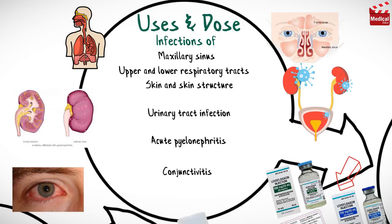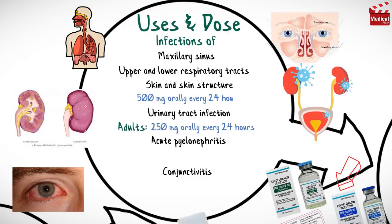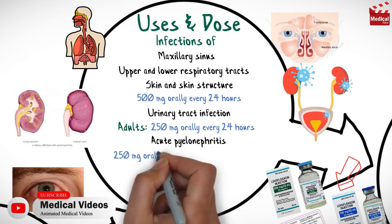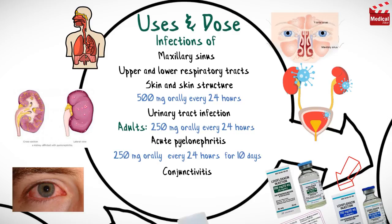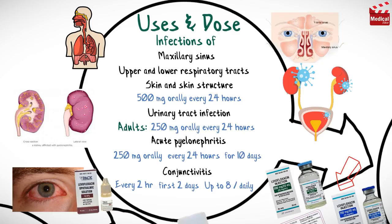The usual dose for urinary tract infection for adults is 250 mg every 24 hours. For infections of the maxillary sinus, respiratory tract, skin and skin structure, the usual dose is 500 mg every 24 hours. For acute pyelonephritis, the usual dose is 250 mg every 24 hours for 10 days. For conjunctivitis, apply the ophthalmic solution every 2 hours for the first 2 days, up to 8 times daily, then apply 4 times a day for 3 days.